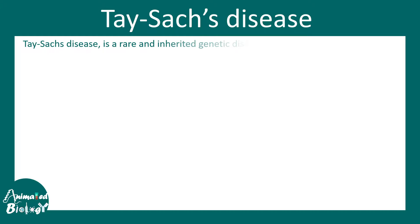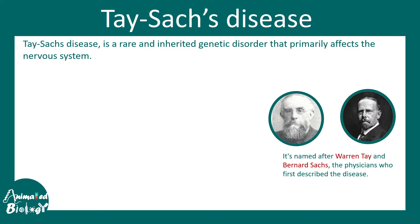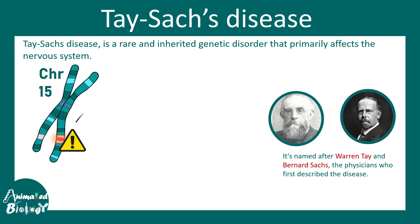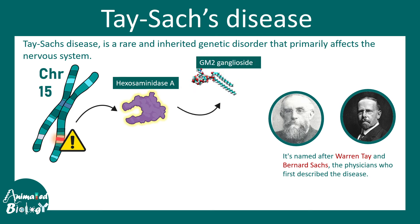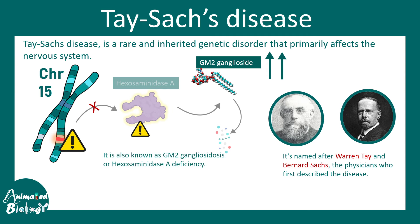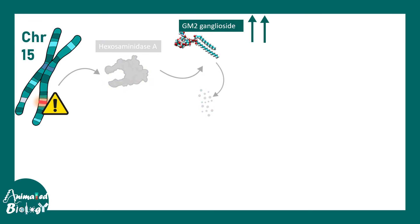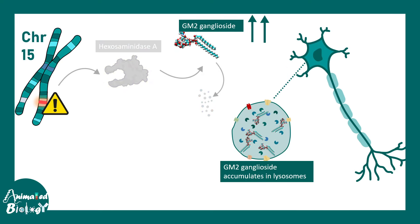Tay-Sachs disease is a rare inherited genetic disorder named after Warren Tay and Bernard Sachs. The problem is on chromosome 15, where a gene encoding hexosaminidase A is mutated. This enzyme normally breaks down GM2 gangliosides, so when it is defective, GM2 gangliosides accumulate in the lysosomes of neurons, leading to several neurological symptoms. GM2 accumulation also causes neuronal damage and neurodegeneration.